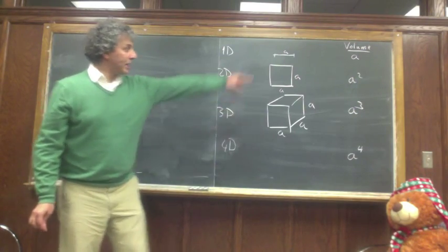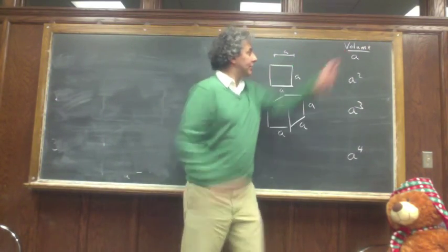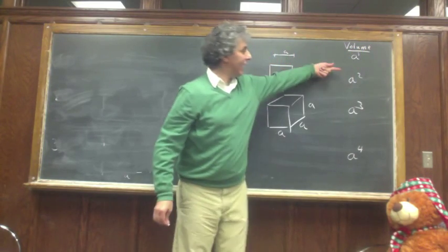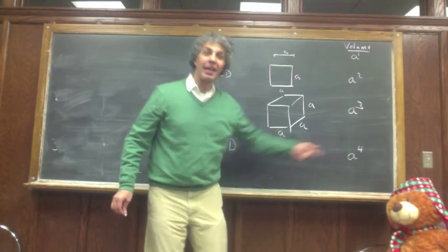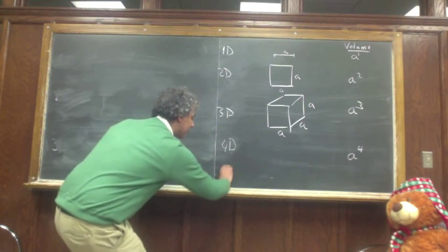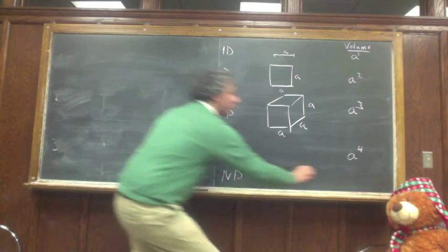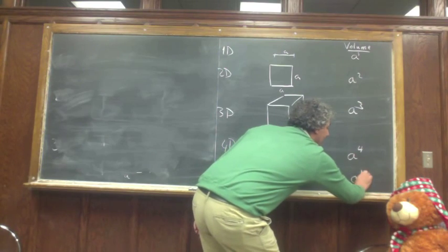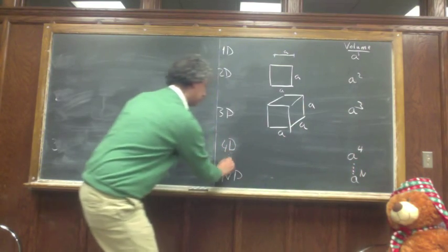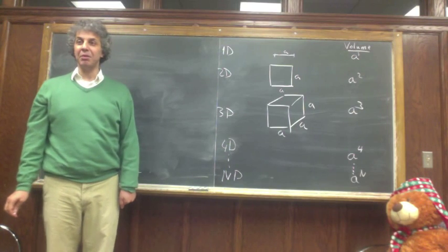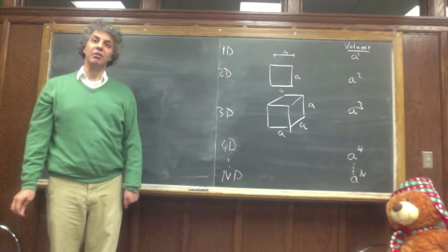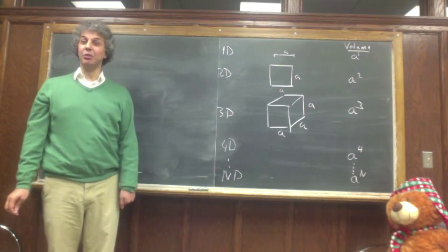It should be obvious: in one dimension this is a to the one, a to the two, a to the three, a to the four. In n dimensions, this would be a to the n. That's the volume of a cube in any dimension, very simple: a to the n.